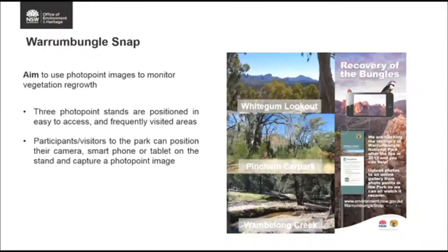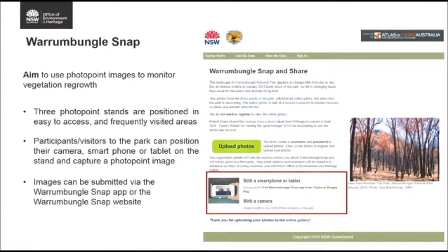We're targeting park visitors for this project. When visitors go to these particular sites, they'll see a sign, and photos have been taken from our three sites at White Gum Lookout, Pitchum Car Park, and Wobblewong Creek. There's an L-bracket at each site and visitors simply position their camera, tablet, or phone on it to take an image. The L-bracket keeps the image at the same height and angle. Once taken, they can upload it directly via the Warrumbungle Snap app or website, hosted by the Atlas of Living Australia.